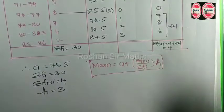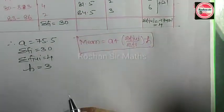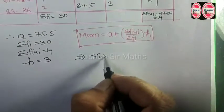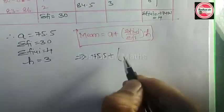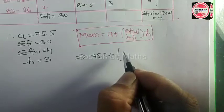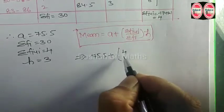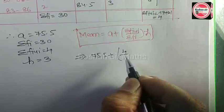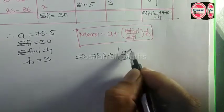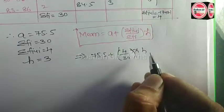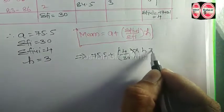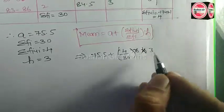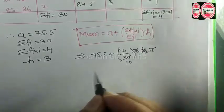Now substitute the values. A is 75.5, FiUi is 4, Fi is 30, H is 3. So we have 75.5 plus (4/30) times 3.